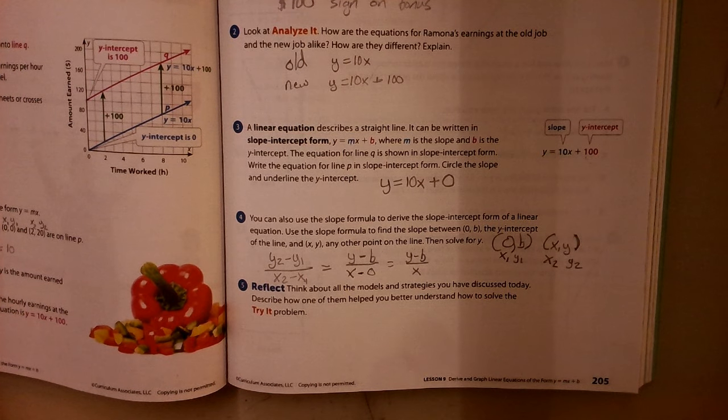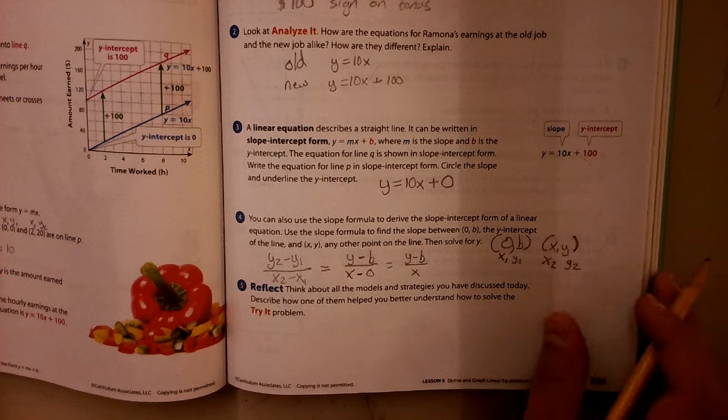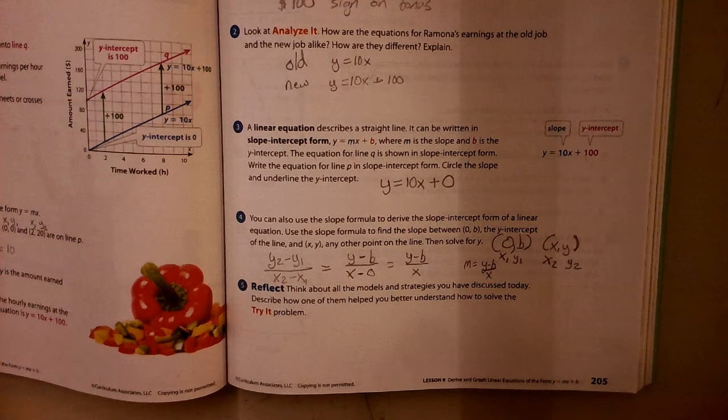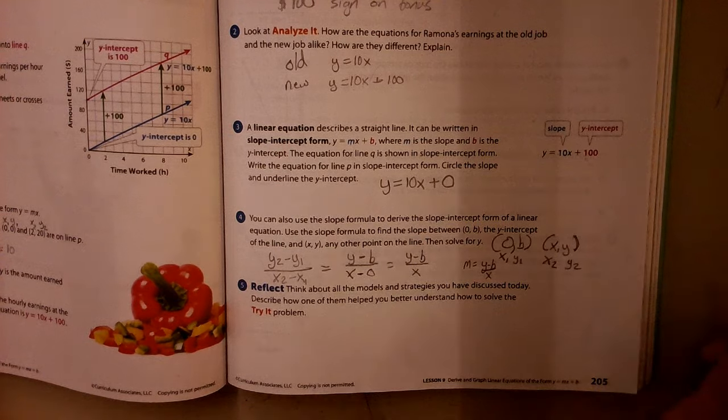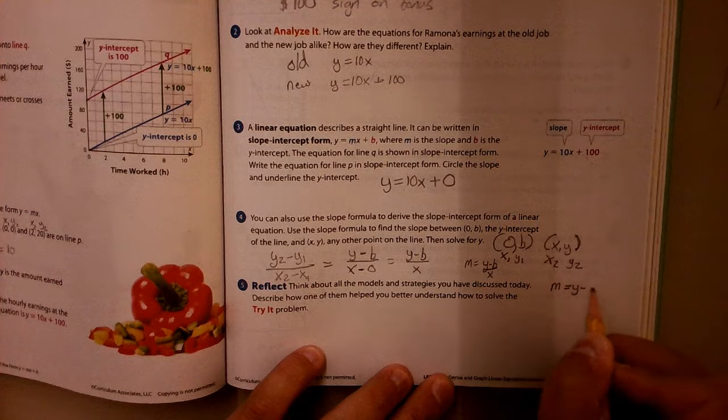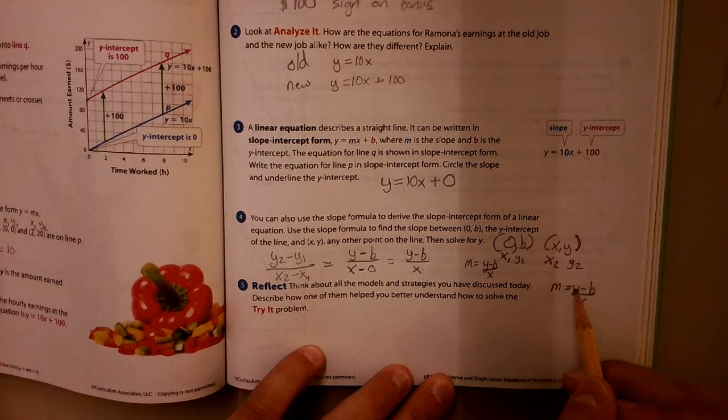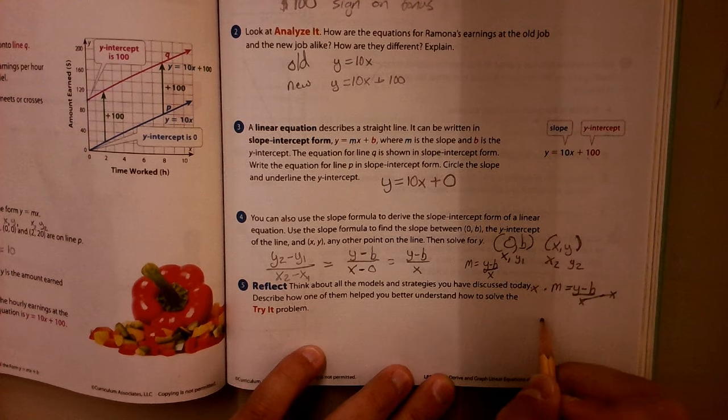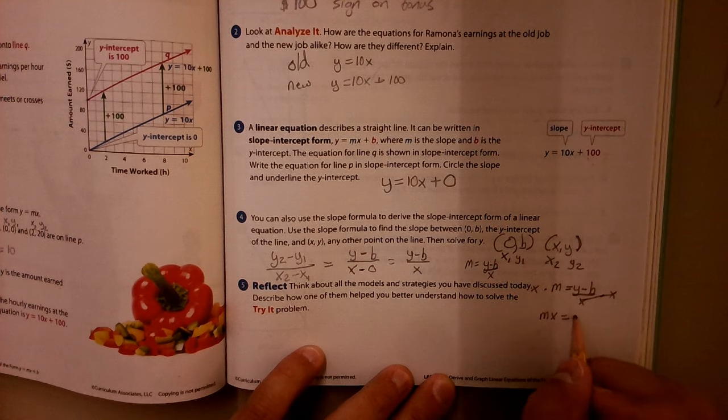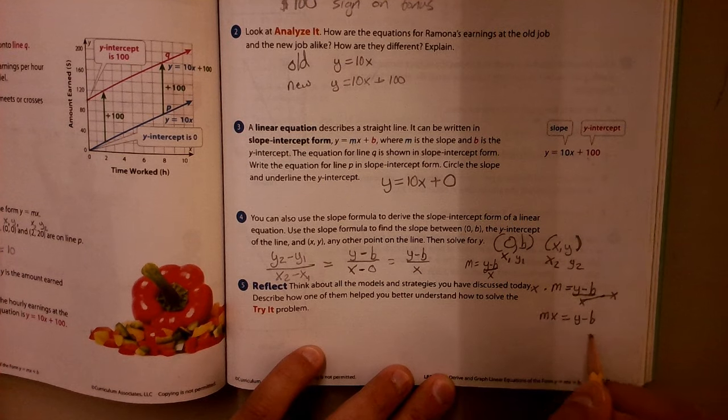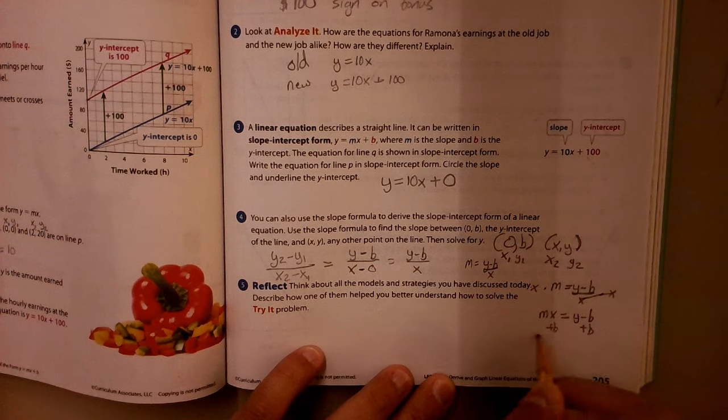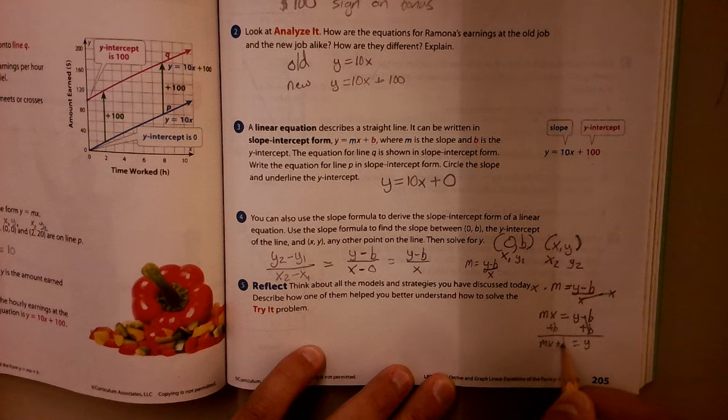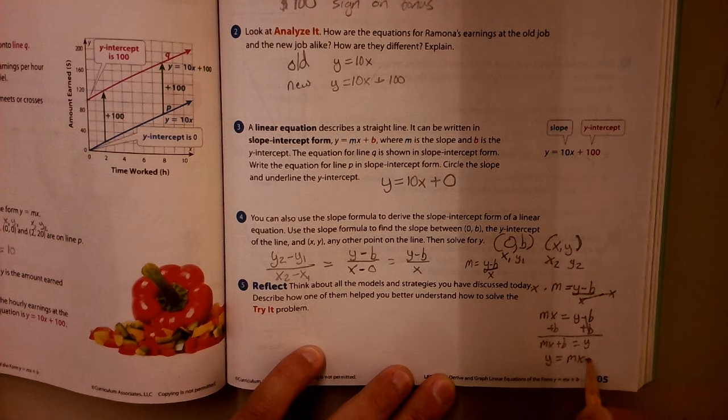Now, it says to solve for Y. So what we're going to do is we have M equals Y minus B over X. Now we have to solve for Y, so we have to get Y by itself. I'm going to actually rewrite it over here. So M equals Y minus B over X. Well, to get Y by itself, I have to get rid of this X, so I'm going to multiply both sides by X. Because that's going to cancel this, and I'm going to get over here MX, because M times X is just MX. And then I have Y minus B. And then I need to get rid of this minus B, so I'm just going to add B to both sides. So these cancel, and I get Y by itself. And on this side, I have MX, and then I have this plus B.